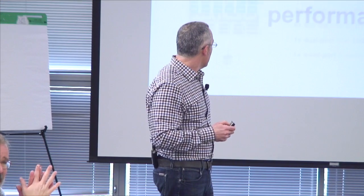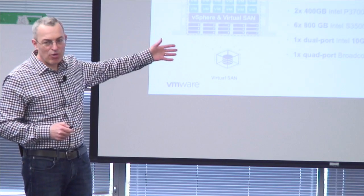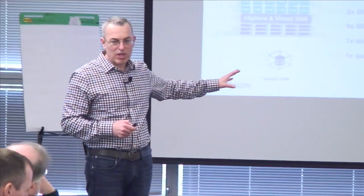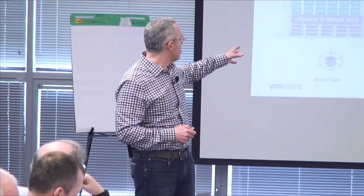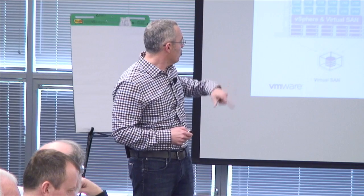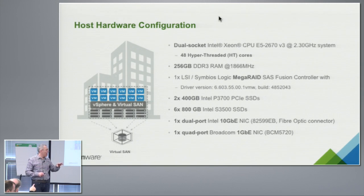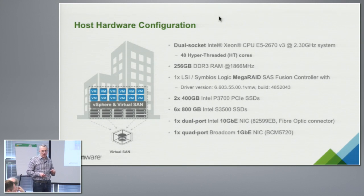On performance — this is just for you to know what hardware we use: very modest hardware, a four-node cluster for all this performance data. Dual socket, 24 cores each, 256 GB of memory, two 400 GB P3700s for the cache tier, six 800 GB S3700s for each node, and a 10 GB network.